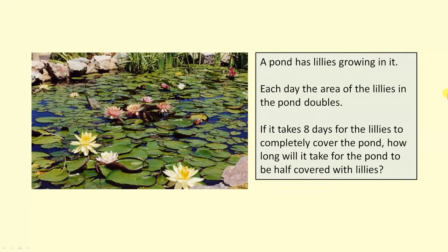A pond has lilies growing in it. Each day the area of the lilies in the pond doubles. If it takes 8 days for the lilies to completely cover the pond, how long will it take for the pond to be half covered with lilies?